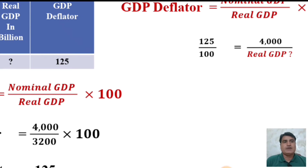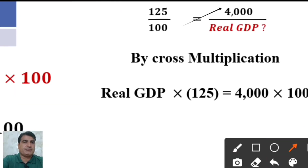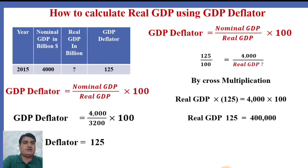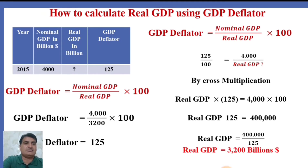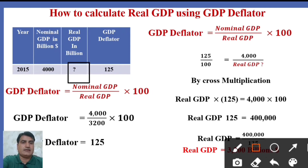$125 over $100 is equal to nominal GDP $4000 over the real GDP, which we are going to find by cross multiplication. Real GDP multiplied by $125 equals $4000 multiplied by $100. So the real GDP will be $400,000 over $125. The real GDP is $3200 billion. The missing figure is $3200. We have proved that the real GDP is $3200 billion.